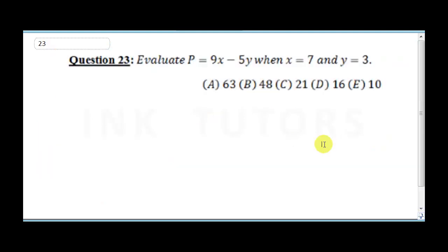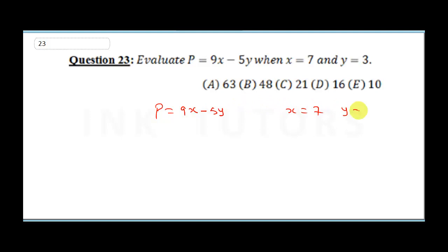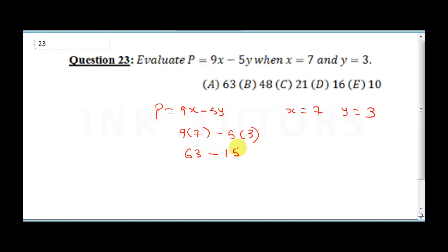Question 23 says: evaluate p equals 9x minus 5y when x is 7 and y is 3. Substituting: 9 times 7 minus 5 times 3 equals 63 minus 15, which gives us 48. The correct answer is option B.